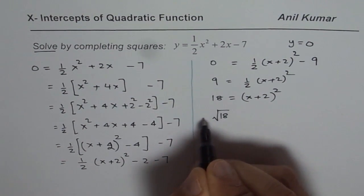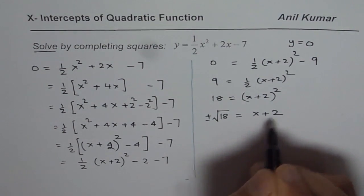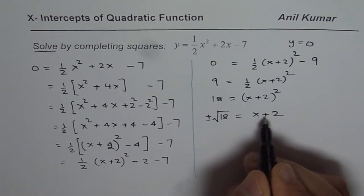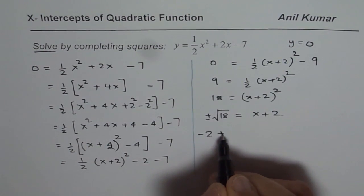Whenever you square root, remember to put plus and minus, equals to x plus 2. And now we can solve for x, write this as minus 2 when you bring it and plus minus.